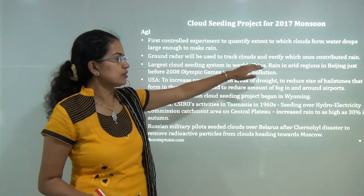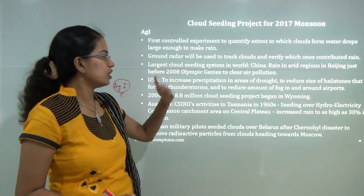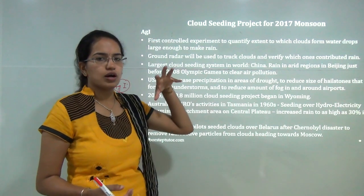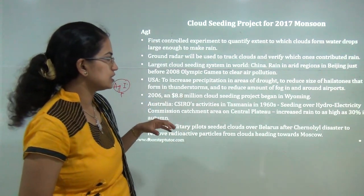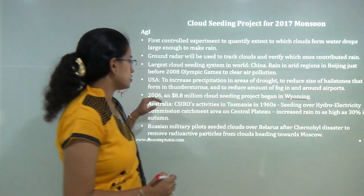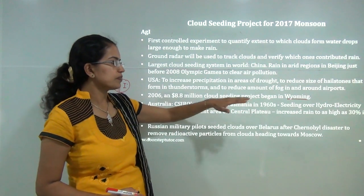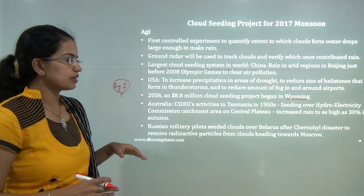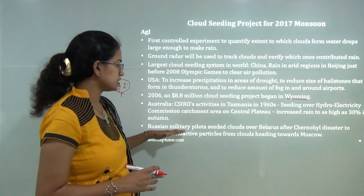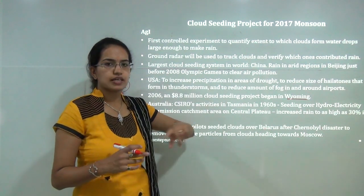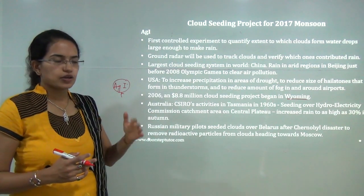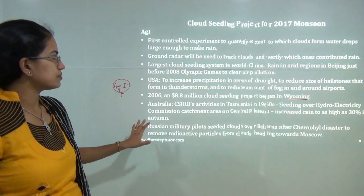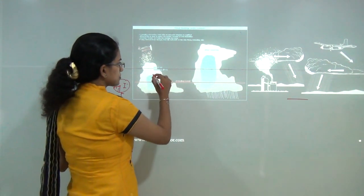However, there have been previous cloud seeding experiments in various countries. Path-breaking experiments include one done in China just before the 2008 Olympics to clear air pollution; in the United States in Wyoming to bring precipitation to drought-prone areas; in Australia over the hydroelectric commission catchment area in Tasmania's central plateau to bring more rain; and by the Russian military over Belarus during the Chernobyl disaster to remove radioactive particles from the atmosphere.